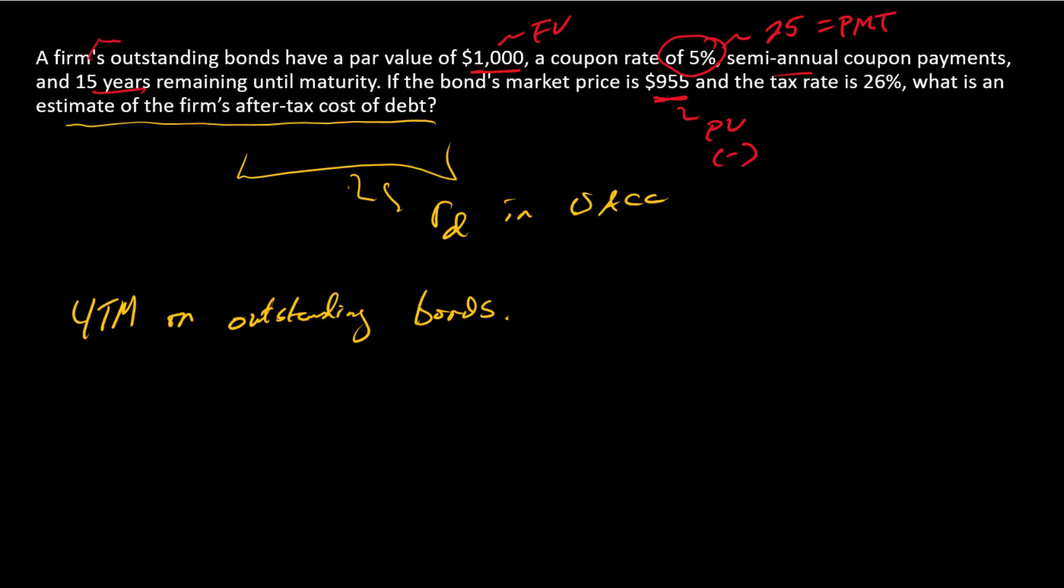And since we have 15 years left in maturity, our semiannual N is going to equal 30.